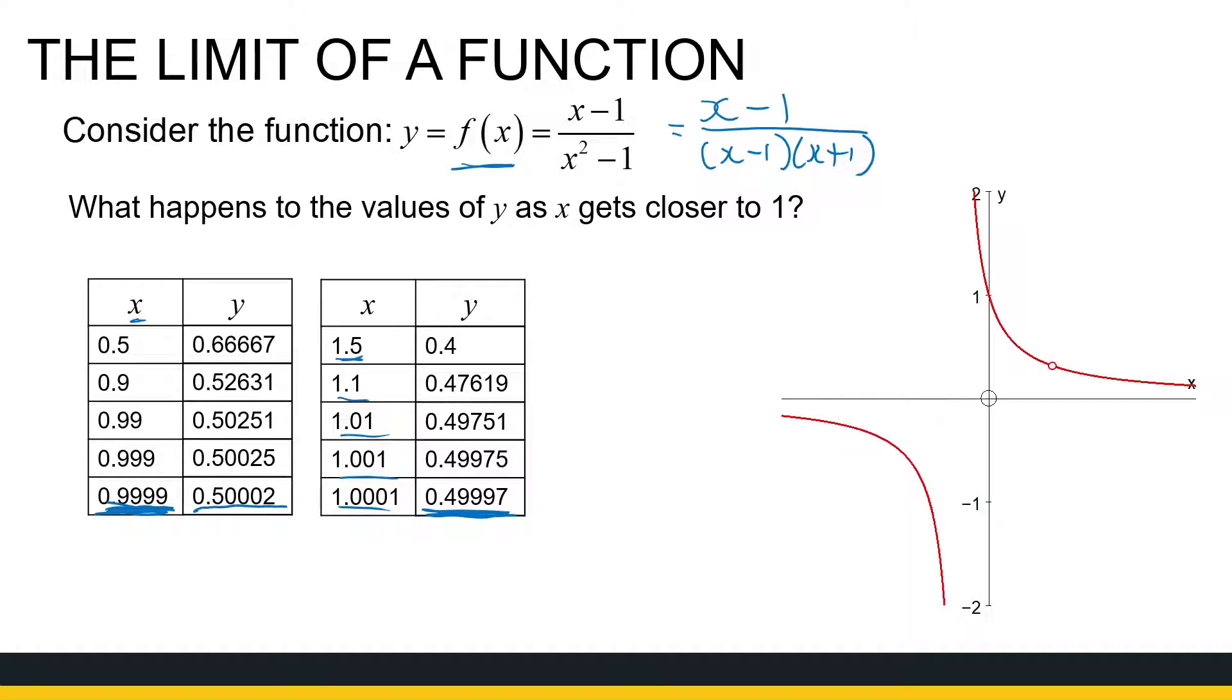Now let's look at the sketch of this graph. Now there's this rational function as an asymptote at x equal to minus 1. But what happens here at x equal to 1 is there's an empty hole in the graph. It's not defined there. But everywhere around 1, this function is defined.